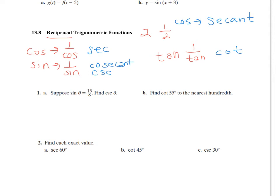So if it's a reciprocal, look at part a. Suppose sine of theta is 15 over 8. Find the cosecant of theta. Cosecant is just the reciprocal of sine, so that is just going to be 8 fifteenths — the ratio 8 fifteenths.